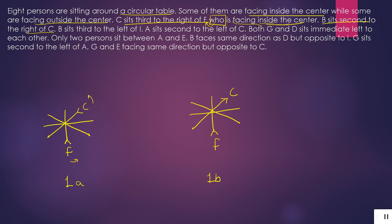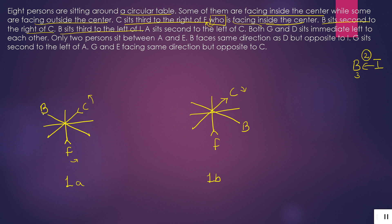B sits second to the right of C. C ka right will go here, so B will come here at position two. Then: B sits third to the left of I — I ke left se third pe B hai. For placing I, we consider two sub-cases for each diagram, giving us multiple possible arrangements to evaluate.